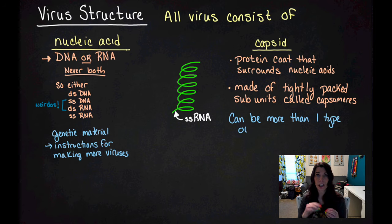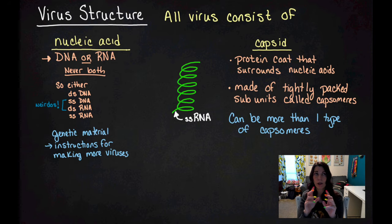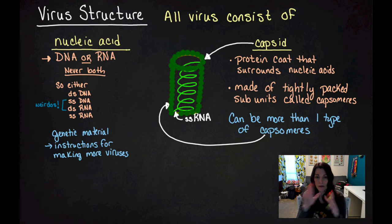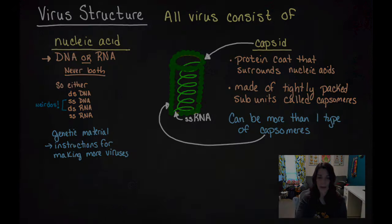The capsomeres can actually be like one specific type of capsomere, or the capsid can be made of several different types. So you could use little red square Legos and then big rectangular blue Legos, and that would form your capsid, your protein coat that surrounds it. You've got your nucleic acid surrounded by the capsid. Each of those green dots is going to be like a capsomere and the whole thing forms the capsid.